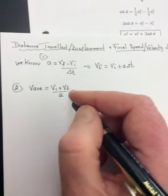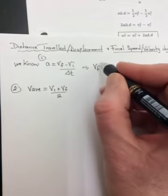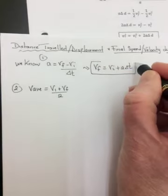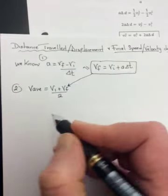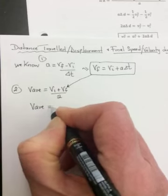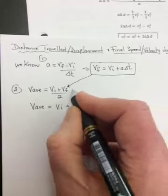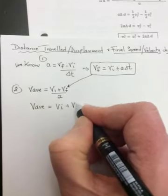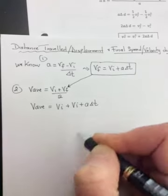So we could rearrange, or we could sub, if we have our VF here, we could take that and we could sub it in right here. So it would become VF, or VF is equal to VI plus, and then where the VF is we would write VI plus a delta T.